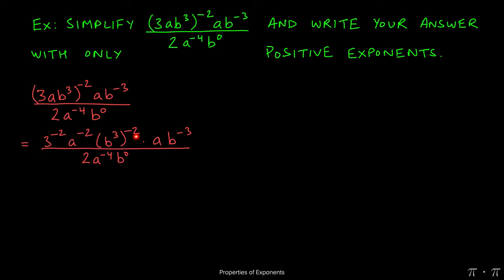Since we have a power raised to another power, we multiply these two together, and that will give us b to the negative 6, while everything else stays the same.